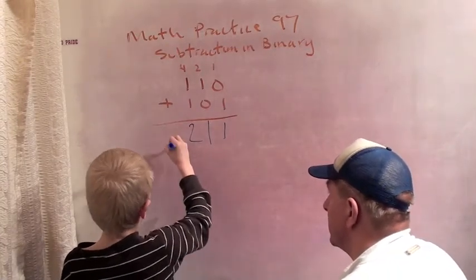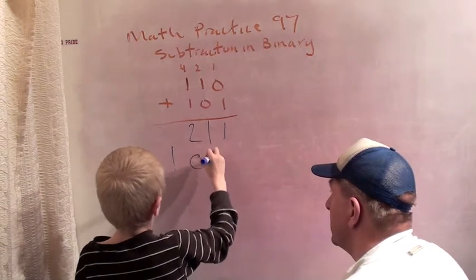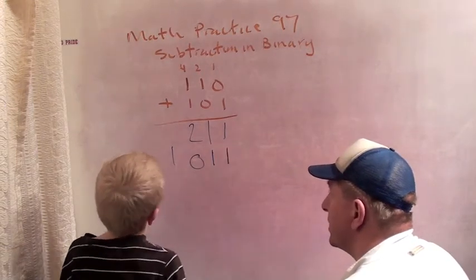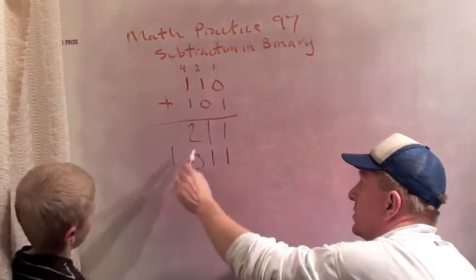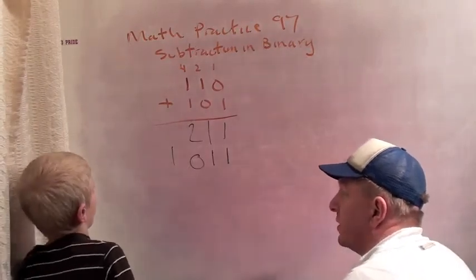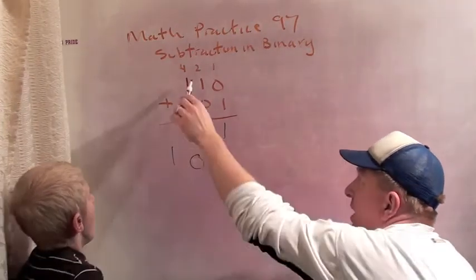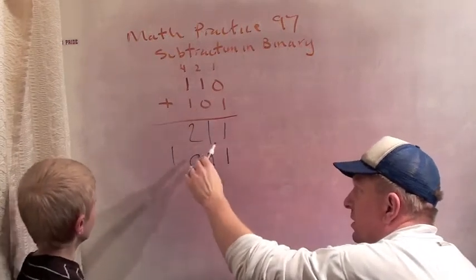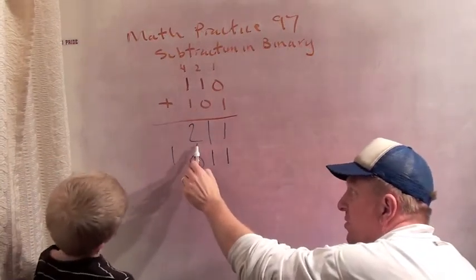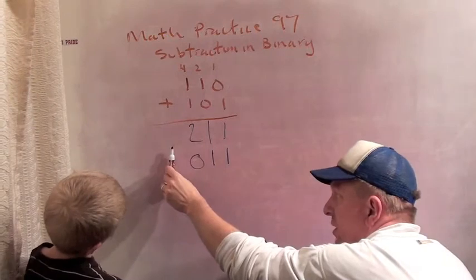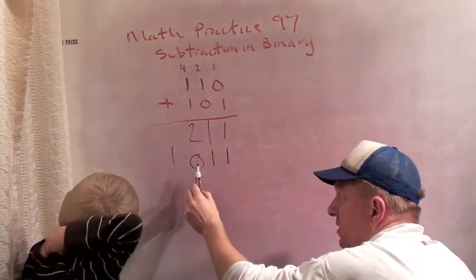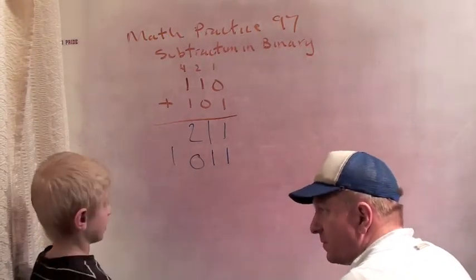Yeah. Okay, so we think 110 plus 101 should be 1011. And the reason is, when you add up the digits, you get 2, 1, 1, but we can't have twos in binary, so the two shifts over one to make a one and leaves a zero.